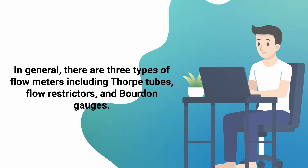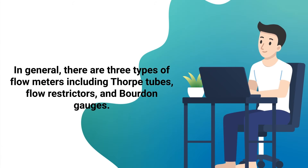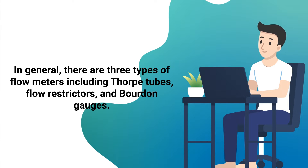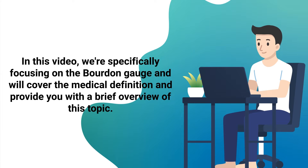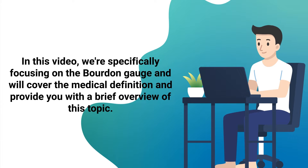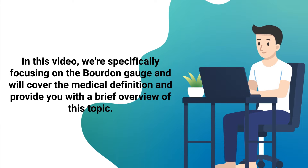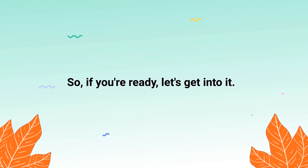In general, there are three types of flow meters: Thorpe tubes, flow resistors, and Bourdon gauges. In this video we're specifically focusing on the Bourdon gauge, and we'll cover the medical definition and provide a brief overview of this topic.